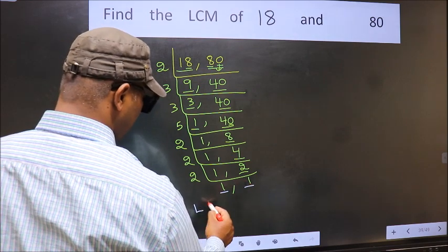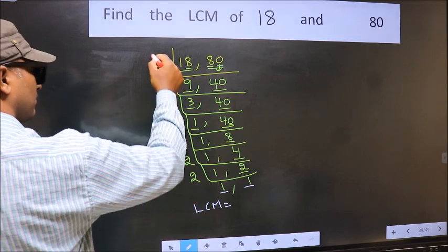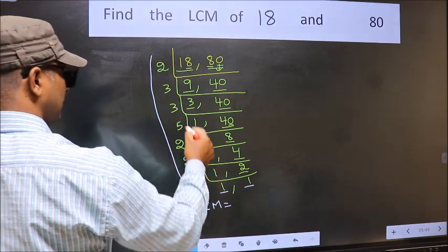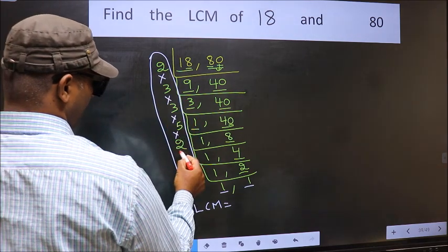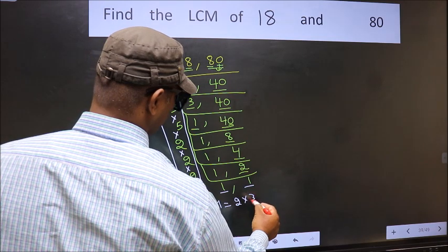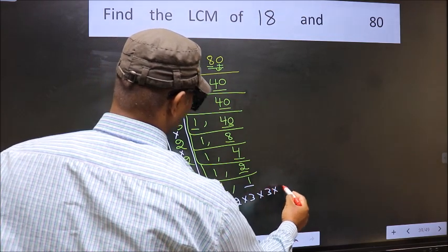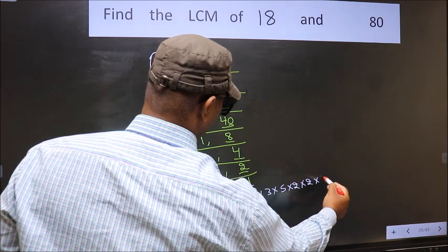So our LCM is the product of these numbers. That is 2 into 3 into 3 into 5 into 2 into 2 into 2.